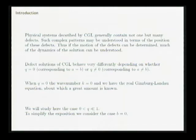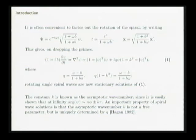The case I'm going to be interested in is where q is non-zero but small — I'm going to consider the limit in which q is much less than one but bigger than zero. To simplify the exposition, I'm going to choose b equal to zero, so I'm just going to have a d psi by dt without the 1 minus ib. You can do everything with the 1 minus ib in there, it's just more algebraically complicated.